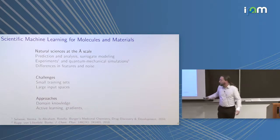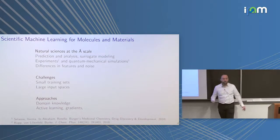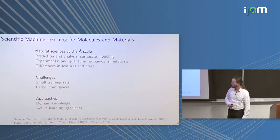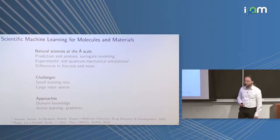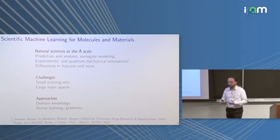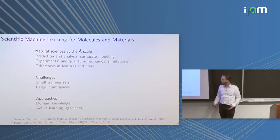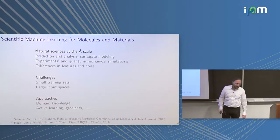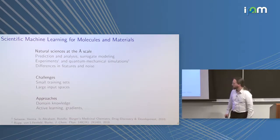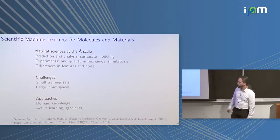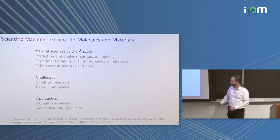People have also started using tricks from the general machine learning community: active learning, training with gradients — because for these calculations we get the first derivative essentially for free. People try to use the whole toolbox. Gradients help a lot, for sure, but features are very important.